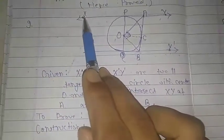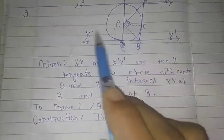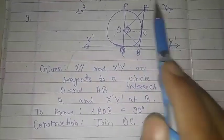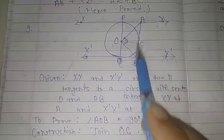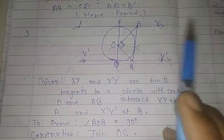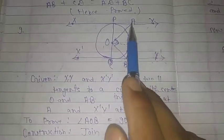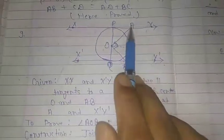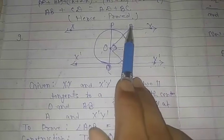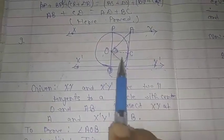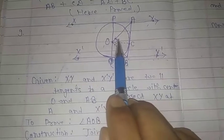It is given that XY and X'Y' are two parallel tangents through P and Q respectively. AB are another tangent through C intersecting XY at A and X'Y' at B. We have to prove angle AOB equal to 90 degrees.